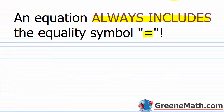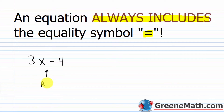When you've looked at algebraic expressions, we only put an equal symbol in once we get a value for it. So as an example, let's say I had something like 3x minus 4. This is an algebraic expression.